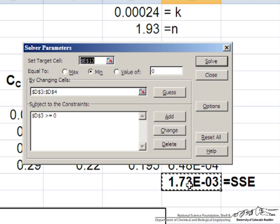So let's go ahead and use the solver routine. And what we're going to do is we're going to set the target cell, the sum of squared errors, equal to a minimum in order to get our best fit. And we'll do that by changing the two cells that control our model fit, which are k and n. So those will be changed.